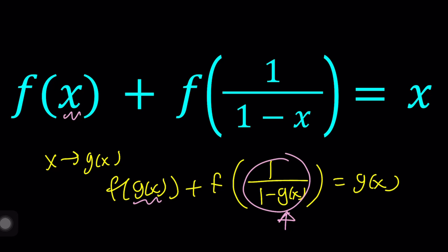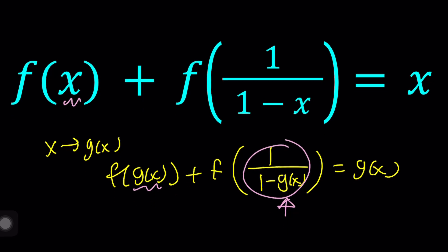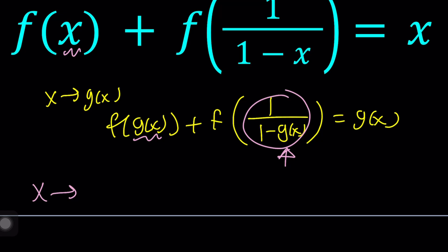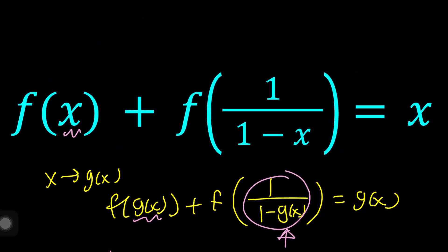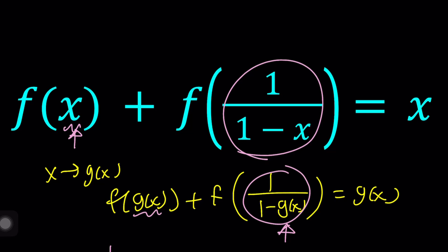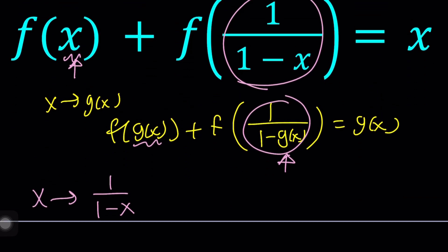But suppose you didn't know that, right? Let's just do what is more obvious. Since we have 1 over 1 minus x as one of the arguments, it would make sense to replace x with 1 over 1 minus x. Because if you pick your g of x that way, at least this is going to be the same as that one. So hopefully we can get somewhere from there. So here's the idea: everywhere in the original equation, replace x with 1 over 1 minus x.